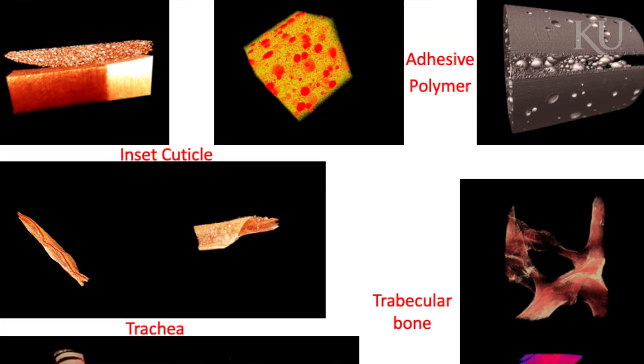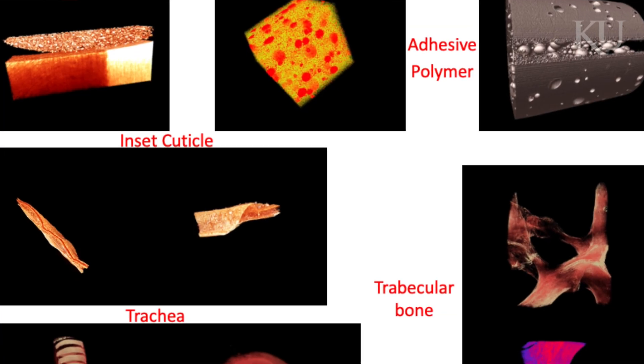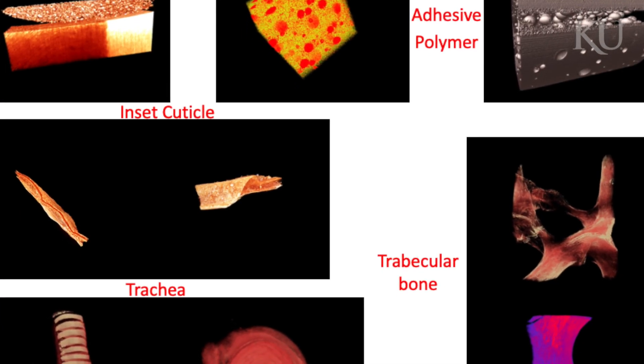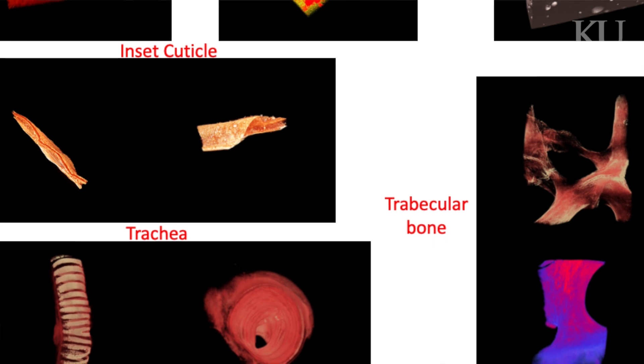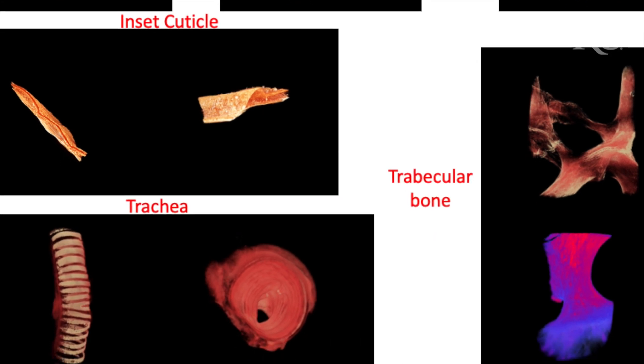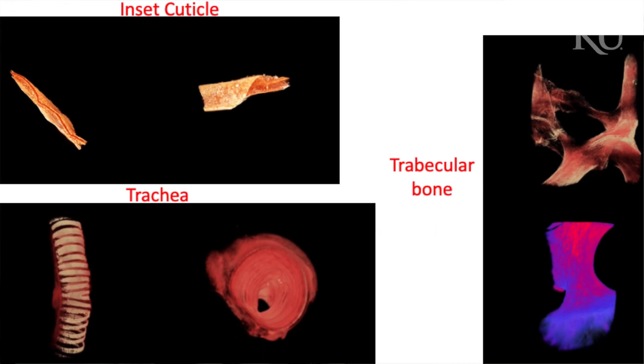You can see here are a few examples of different materials that we have studied within the microCT. We can have this really beautiful 3D rotational image which really gives us a lot of insight into the internal side of our material.